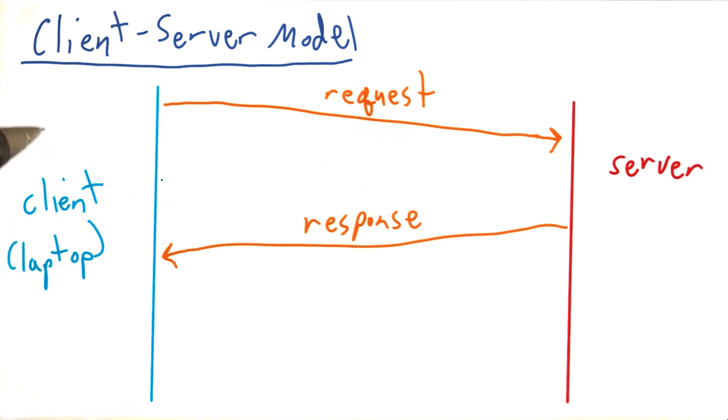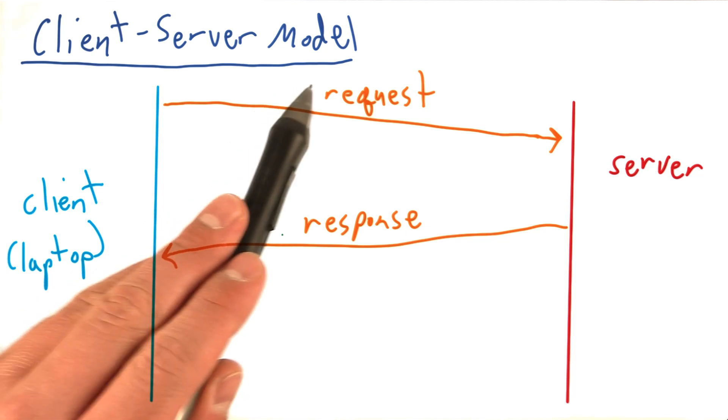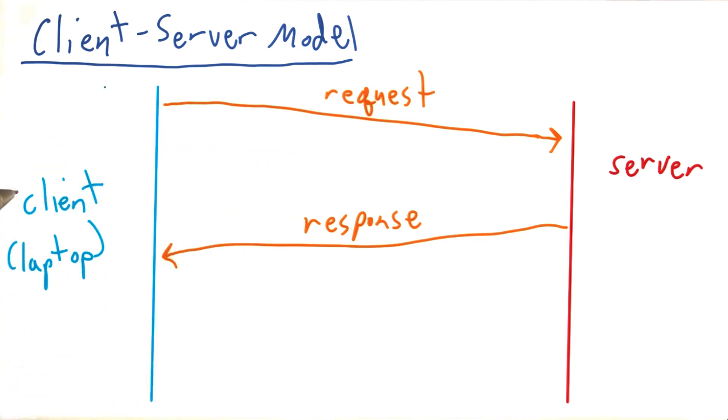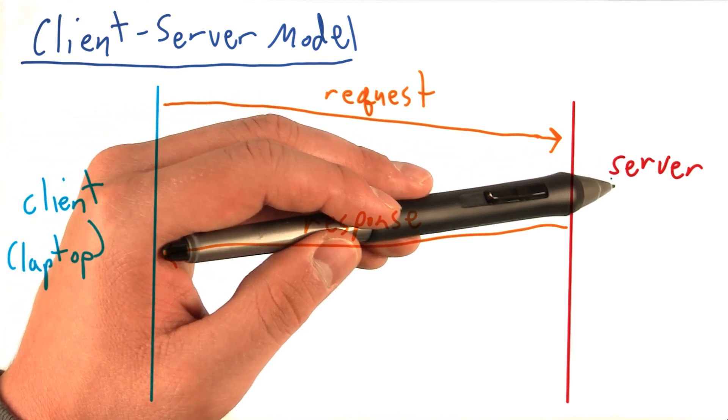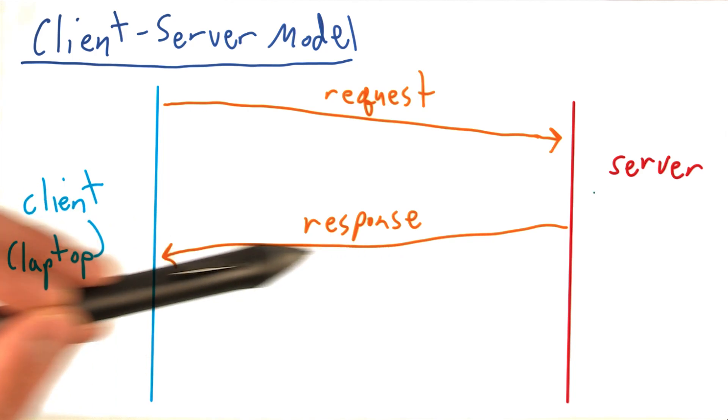Now, hopefully, you have an idea of the general request and response model of the client-server model, where you, the client, or your laptop and its web browser, requests a webpage, which a server on the internet, located at the address you request, sends you back some HTML.